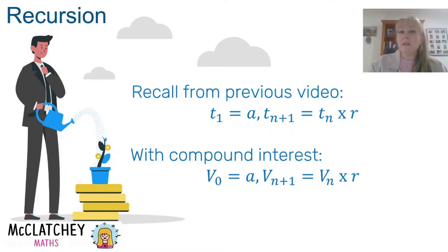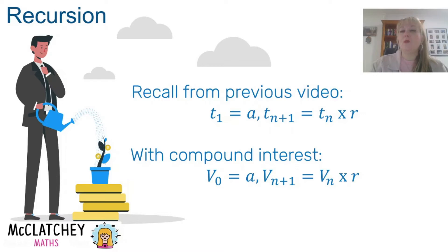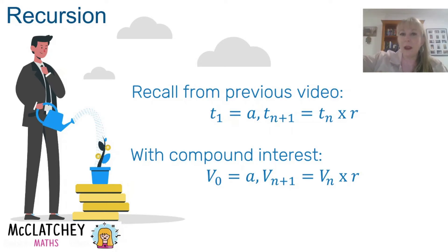R equals the interest rate as a decimal per compounding period, plus 1. The reason for that is because compound interest is exponential growth — we need to multiply our amount by itself plus the rate of interest. So when calculating R, simply add 1 to the interest rate per compounding period expressed as a decimal.